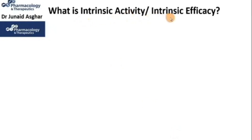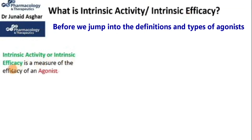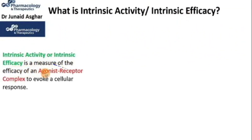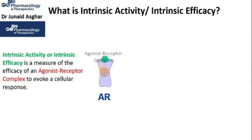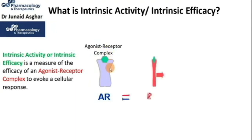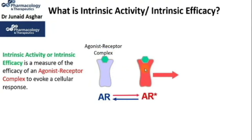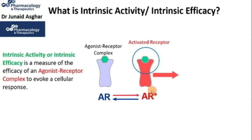Let's see what is intrinsic activity, also called intrinsic efficacy. Intrinsic activity or intrinsic efficacy is a measure of the efficacy of an agonist-receptor complex to evoke a cellular response. For example, agonist A binds to the receptor R, they bind together and form an agonist-receptor complex. The receptor is then activated — shown in red as AR star — representing the active form of the receptor. This leads to a cellular response, which is translated as the efficacy of the agonist.